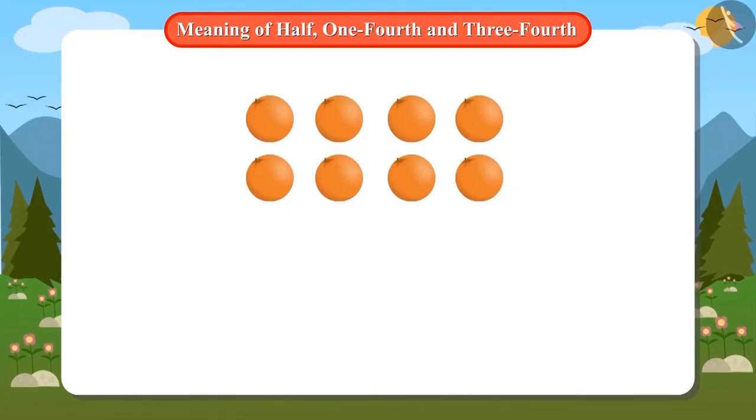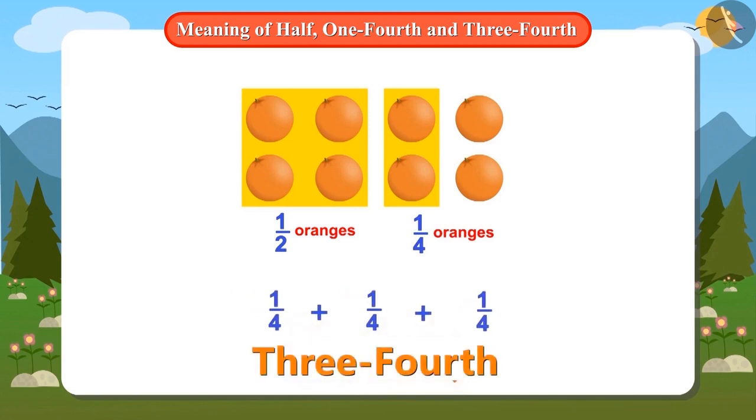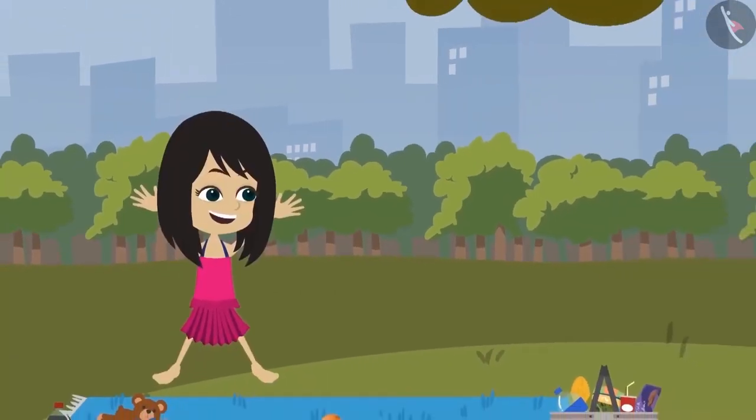See, we gave Papa half of the total oranges. If you divide this half also in half, you will get two quarters. Mummy already has a quarter of the total oranges. It means Mummy and Papa have three quarters.